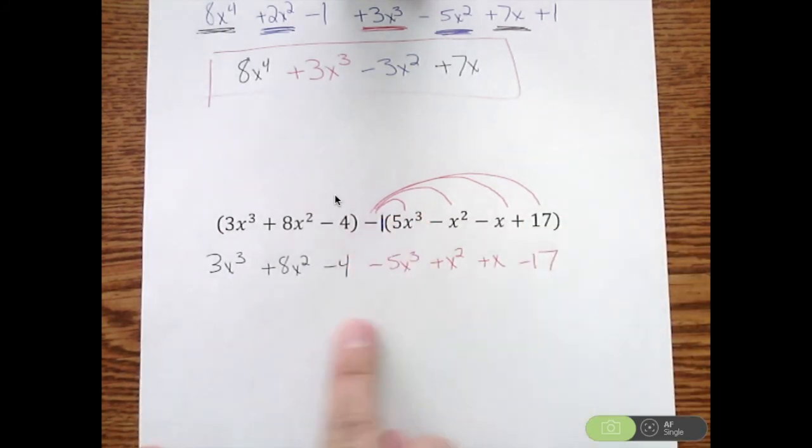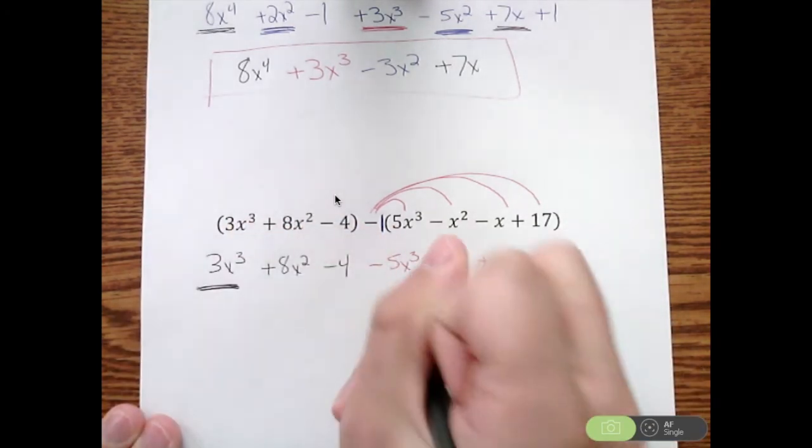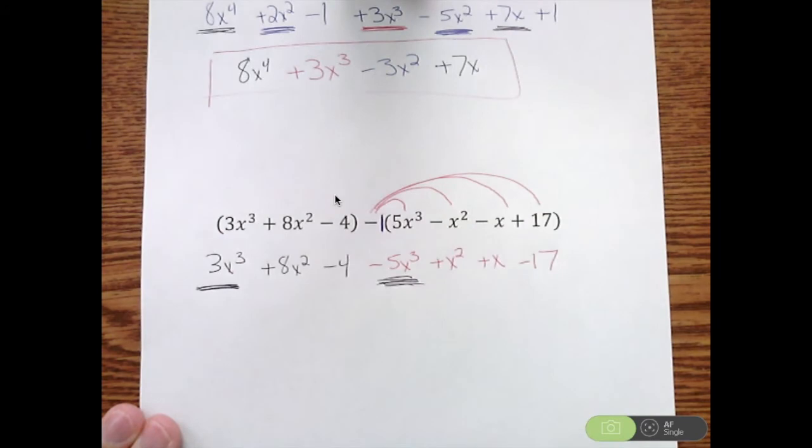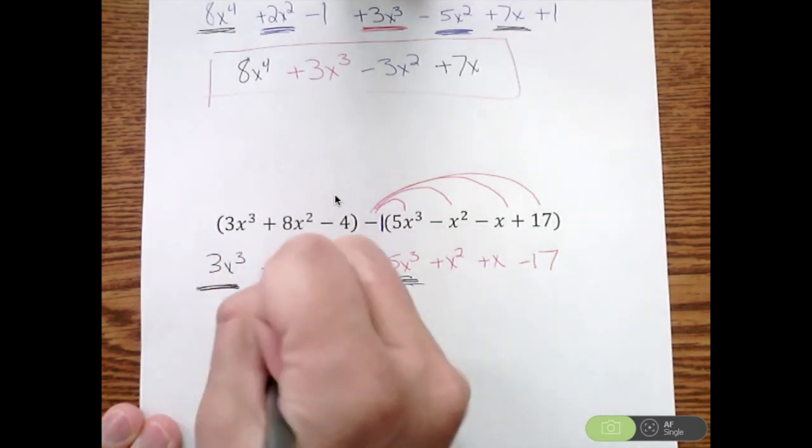Once you distribute, it's going to be very similar to the problem we did earlier, just combining like terms. I'm going to start with the highest power, my x cubes. I have a 3x cubed minus 5x cubed. That's going to give me negative 2x cubed.